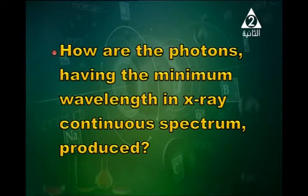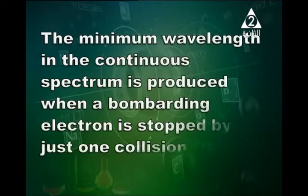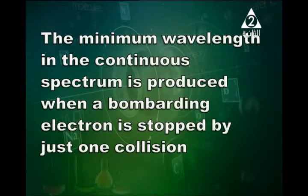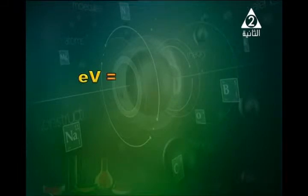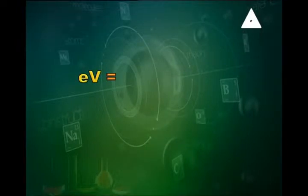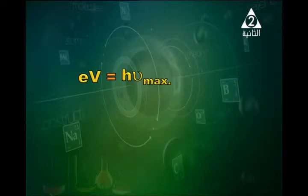How are photons having the minimum wavelength in the X-ray continuous spectrum produced? The minimum wavelength is produced when a bombarding electron is stopped by just one collision, and all its energy is converted into a photon. The energy gained by the electron in the electric field is eV. The electron loses all its energy into a photon having energy h·ν_max, where ν_max can be replaced by c/λ_min.